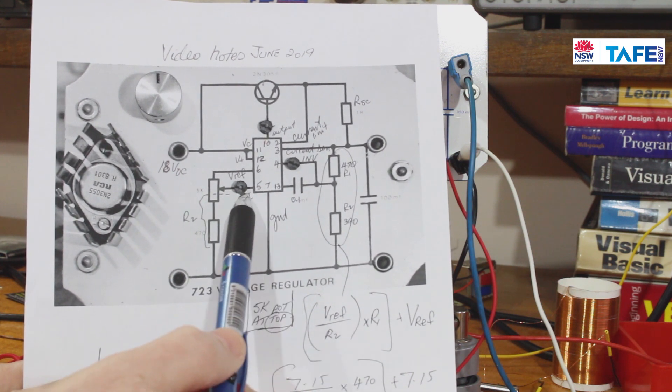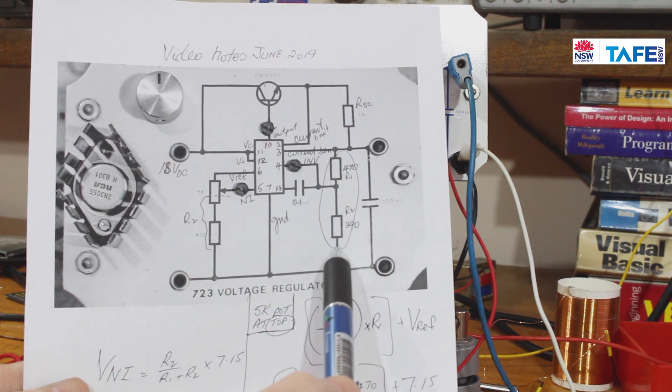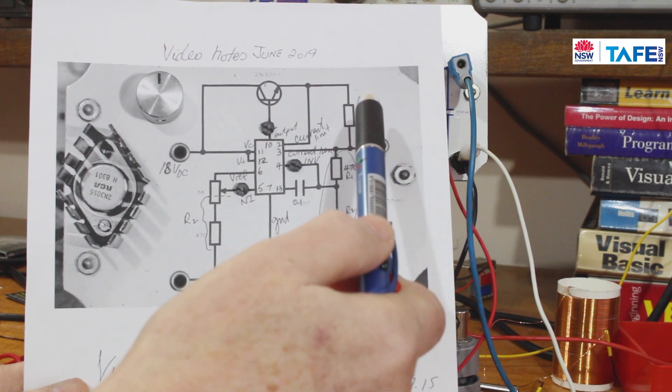We find that this voltage going into the non-inverting input is actually used in conjunction with this right-hand configuration, this voltage divider, to determine the final output voltage.